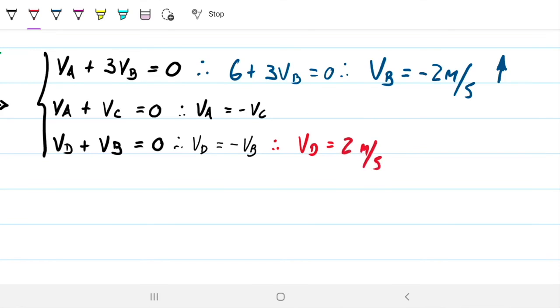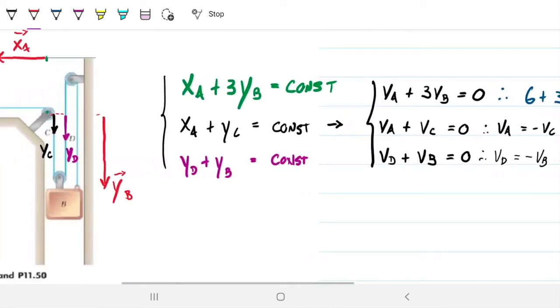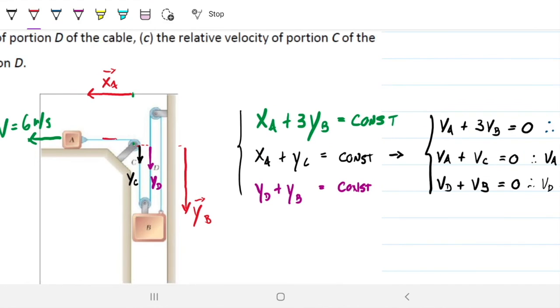Once again, that should be fairly intuitive. If A is moving leftwards, then this rope is pulling this way, which is going to be pulling everything this way, which is going to be pulling this way. So that means that D is going downwards, which is our positive direction. So that is indeed intuitive.